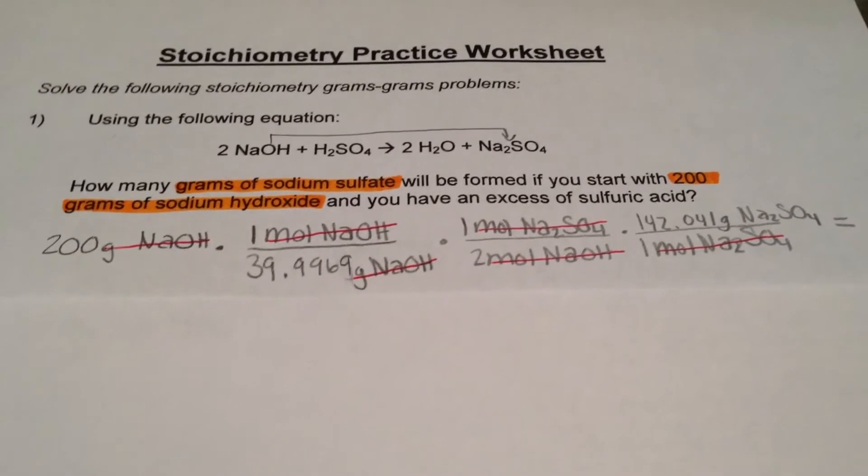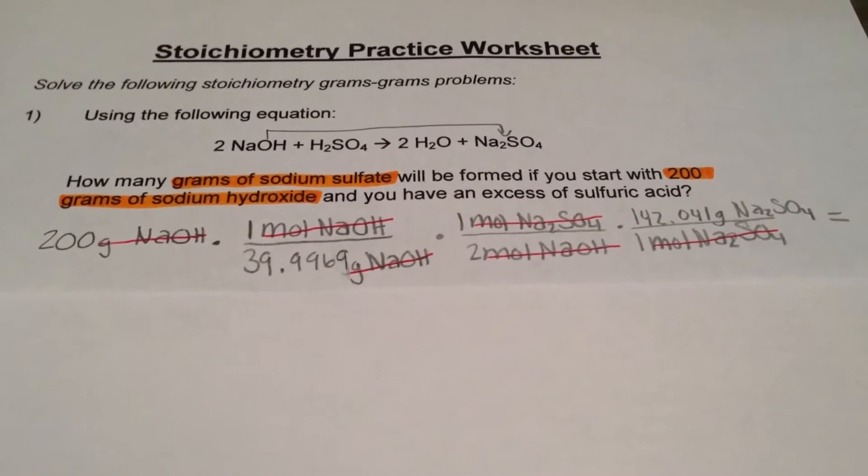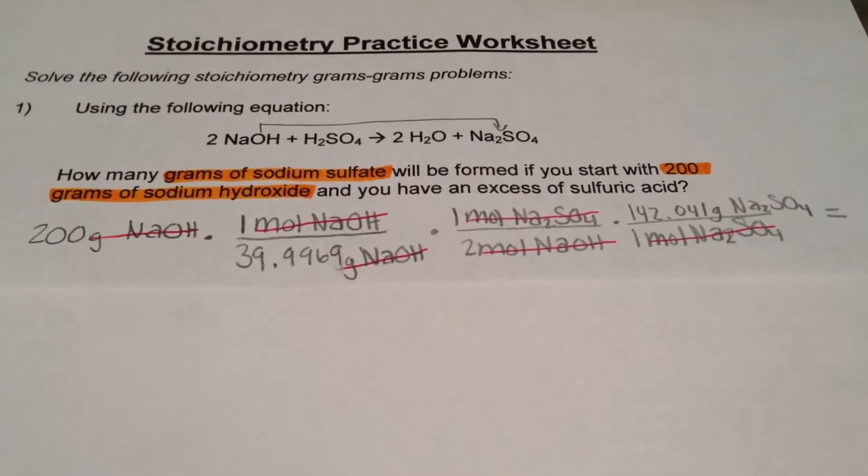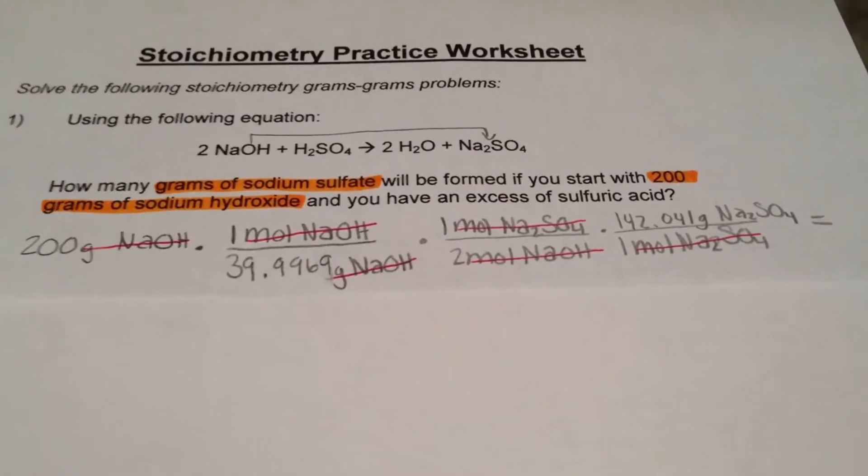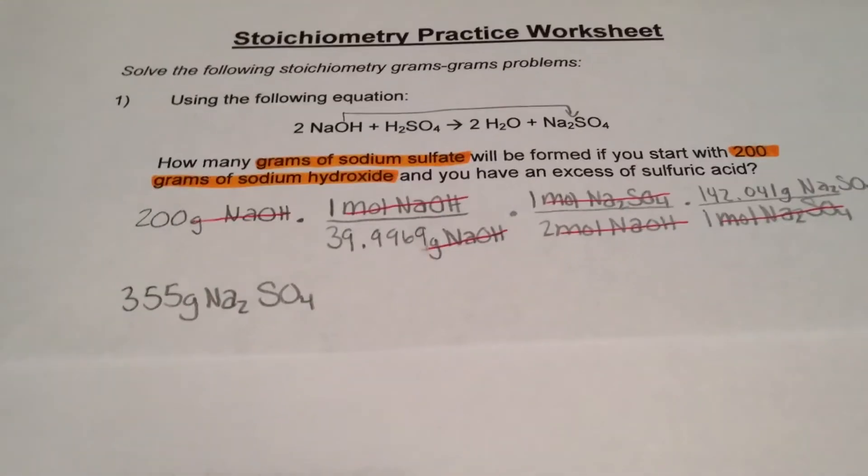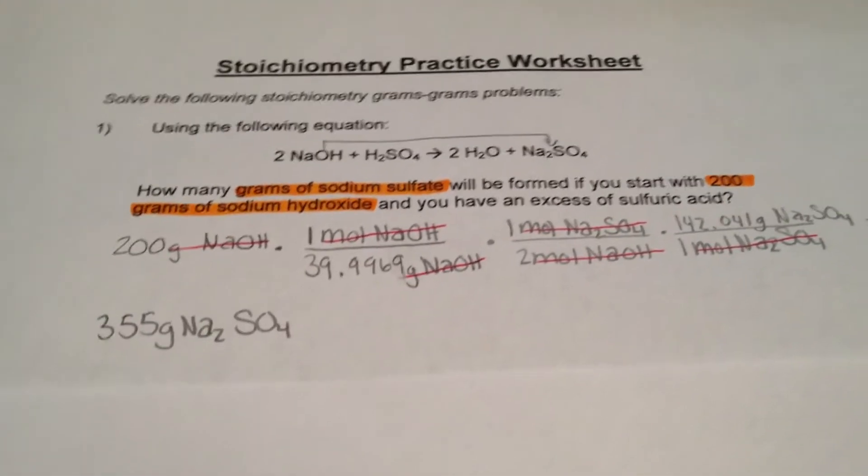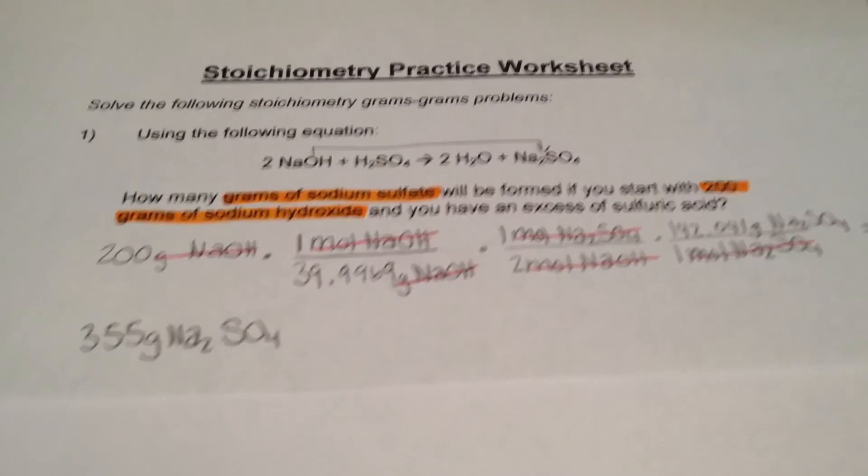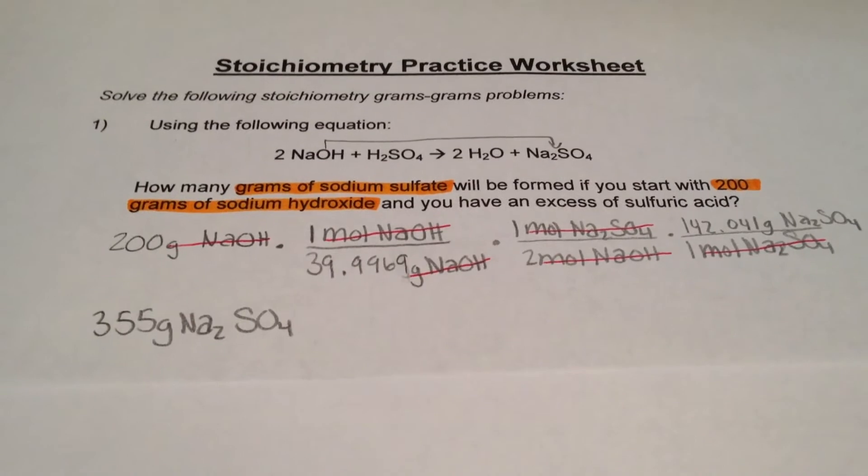Then you want to put the molar mass of sodium sulfate so we can find how many grams of sodium sulfate will be formed. When you put this into your calculator, you should get 355 grams. Because of the significant figures, we only have three numbers.